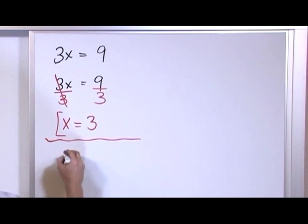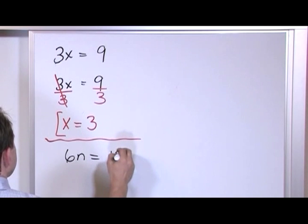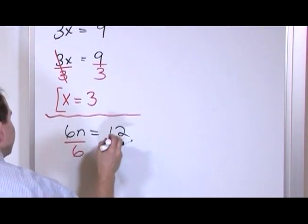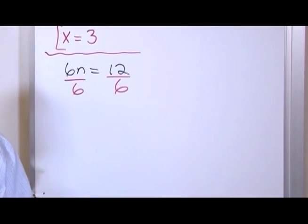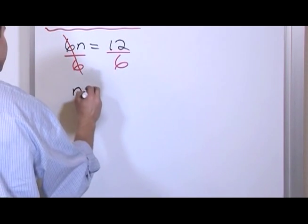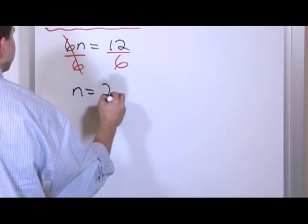So, another example, if you had 6 times n is equal to 12, this is multiplication. The only way to get n by himself is to do the opposite, to do division. So I'm going to divide by 6. Then I'm going to have these 6's cancel like that. So I'm going to have n is equal to 12 divided by 6, which gives me 2.